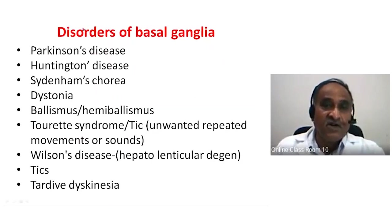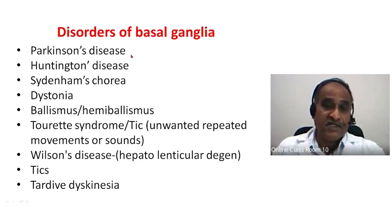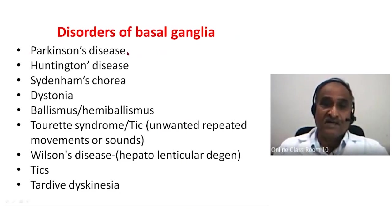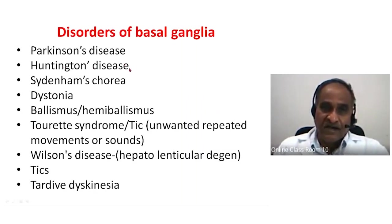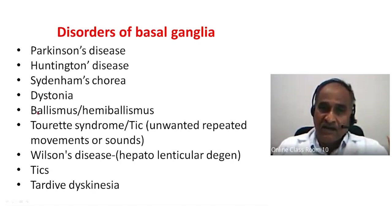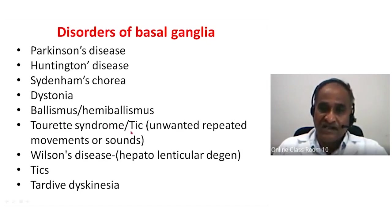The disorders of the basal ganglia include: Parkinson's disease — one of the most important for examination — Huntington's disease, Sydenham's chorea, dystonia, ballismus or hemiballismus (due to subthalamic involvement), and Tourette's syndrome involving tics — unwanted repeated movements or sounds.